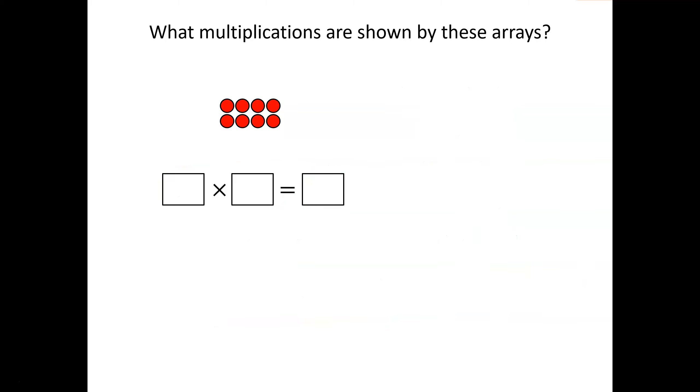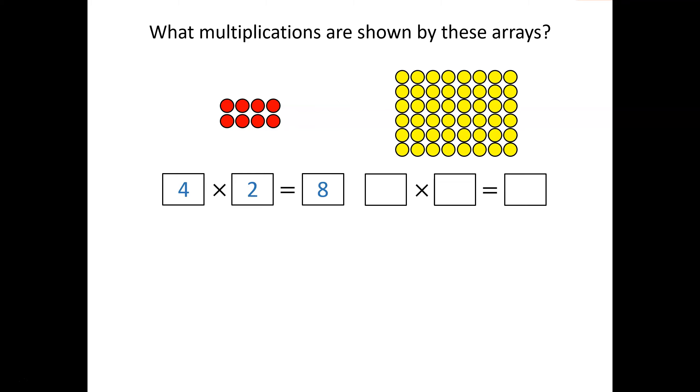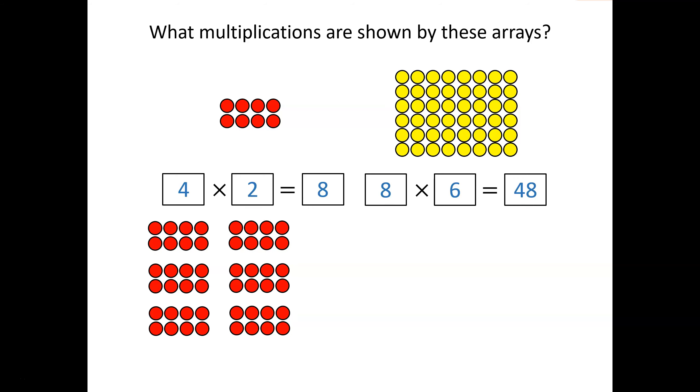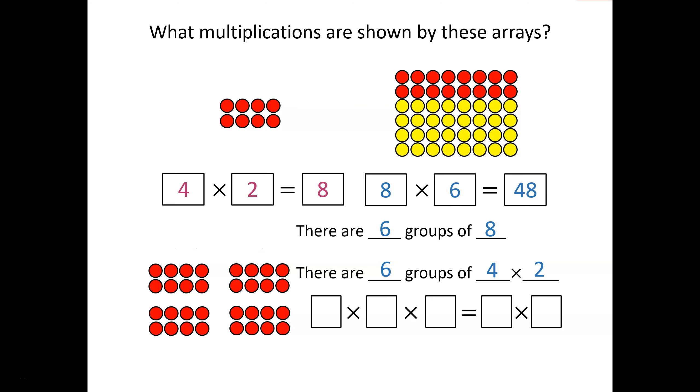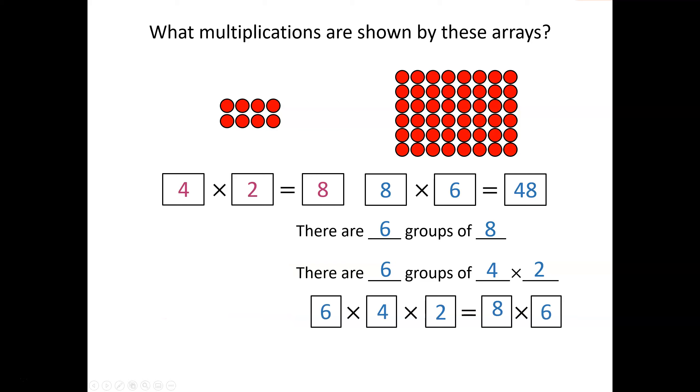In just the same way, I want you to work through this next challenge with me. In this array we have four counters and they're multiplied by two, which is equal to eight counters. What multiplication is shown by this array? Have a think. There are eight counters multiplied by six, which is equal to 48 counters. Have a look at this next group of counters. Can you see how our red counters could in fact match the yellow array? Pause the video now and try to complete the sentences and fill in the missing numbers. There are six groups of eight counters. So we can actually say there are six groups of four multiplied by two. Look at how the two sets of counters match. So we can actually say 6 × 4 × 2 = 8 × 6.